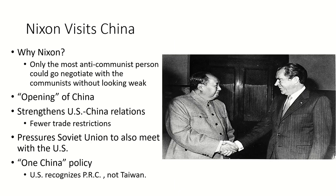Nixon visited China, becoming the first American president to visit communist China — a huge moment, because the U.S. had been trying to isolate China and now would try to befriend them. Nixon was able to negotiate partly because he was the most anti-communist American politician; neither he nor Chairman Mao could be accused of being weak. Nixon wanted to open up China's trade and diplomacy to the West, and saw this as the opportunity to split the Soviets away from the communist Chinese.